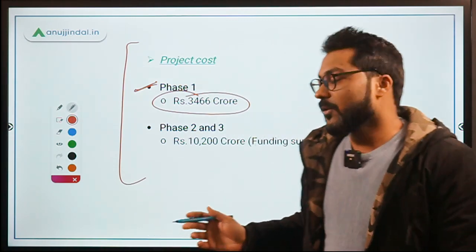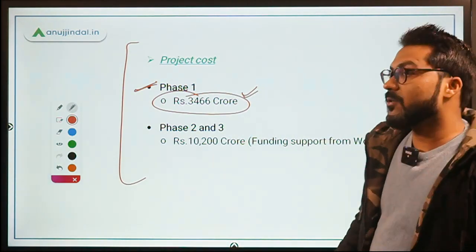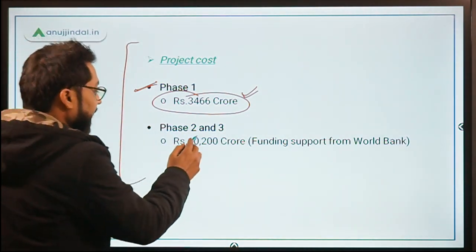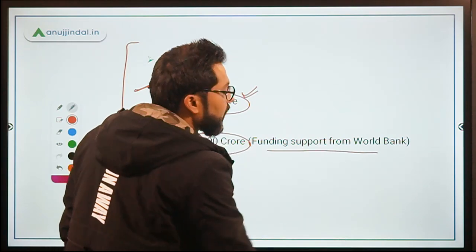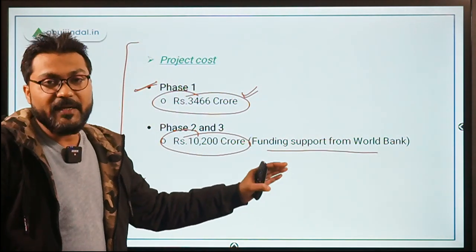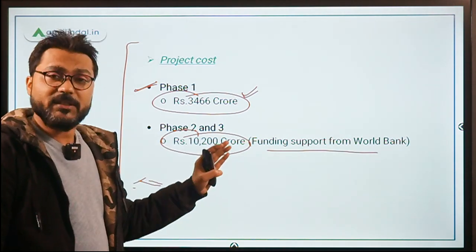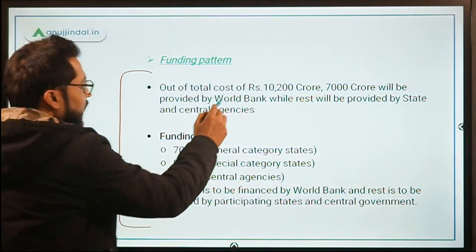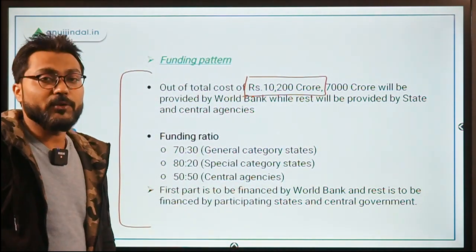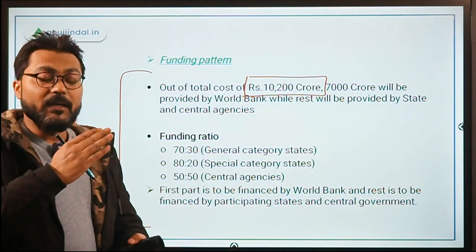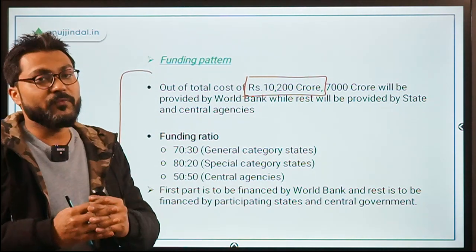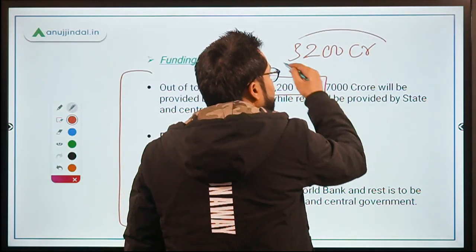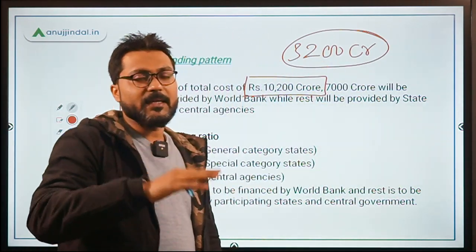The phase one total project cost was 3,466 crore. For phase two and phase three, the total estimated cost is 10,200 crore with funding support from the World Bank. Out of this 10,200 crore, approximately 7,000 crore will be provided by the World Bank, while the remaining 3,200 crore will be provided by the central government and the respective state governments.